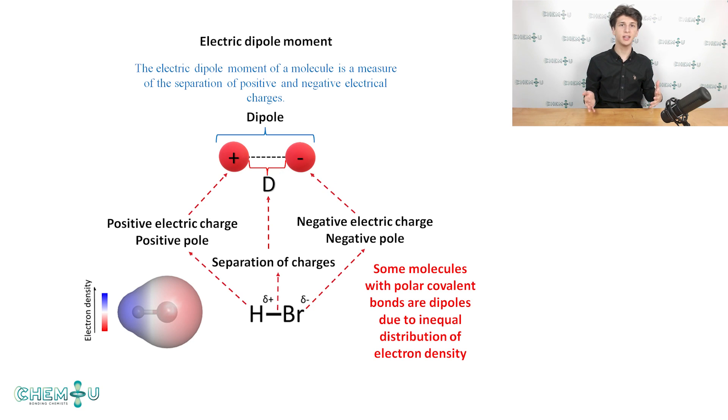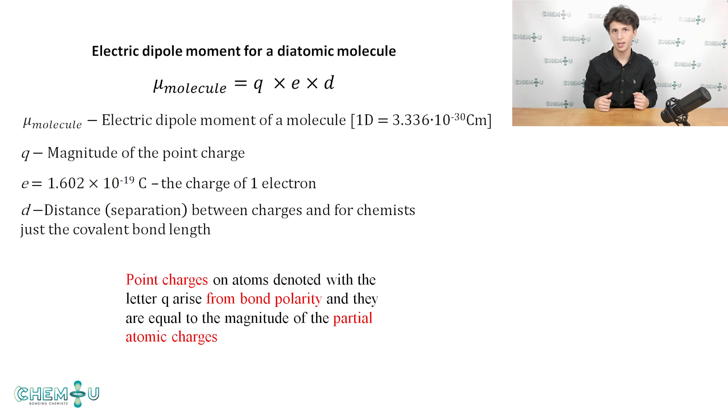As we have already seen, the electrons aren't distributed equally within a molecule due to differences in the electronegativity of the constituent atoms. It means that a diatomic molecule can form a dipole and should be treated as an electric dipole. The dipole moment of a diatomic molecule is given by the equation on the slide right now. Here, the letter d is the distance between point charges and for chemists, it is just the internuclear distance or covalent bond length. e is the charge of one electron and its value can be seen on the screen now. Lastly, the letter Q is the magnitude of the point charge. The dipole moment itself is denoted with the Greek letter mu.